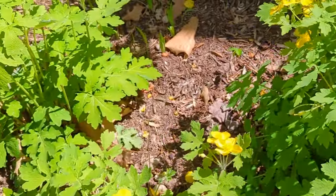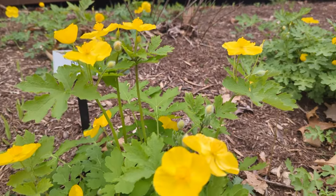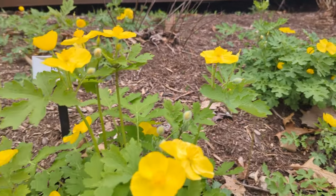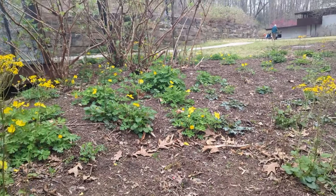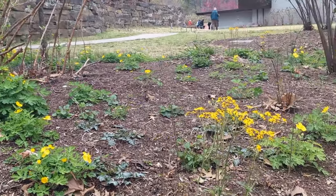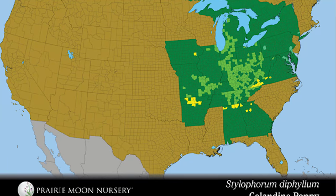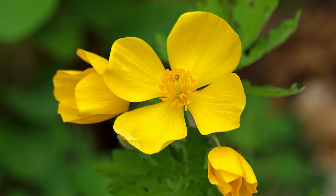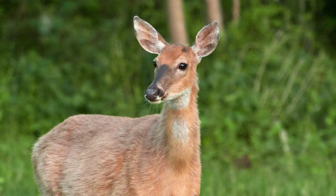One of my favorite native poppy species is celandine poppy. It produces really cool yellow flowers during the spring months and is not very tall — usually one to two feet. It works really well in a mass planting in a woodland or shady garden setting and makes a great ground cover. Deer do sometimes go for it, but with deer spray or other deterrents it works very well as a spring ground cover. It will die back as it gets warmer but always comes up every year.